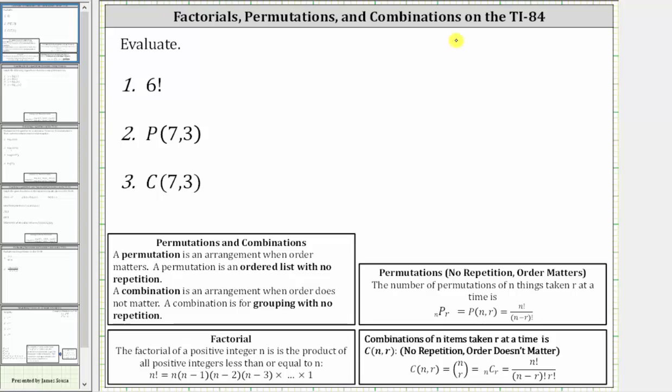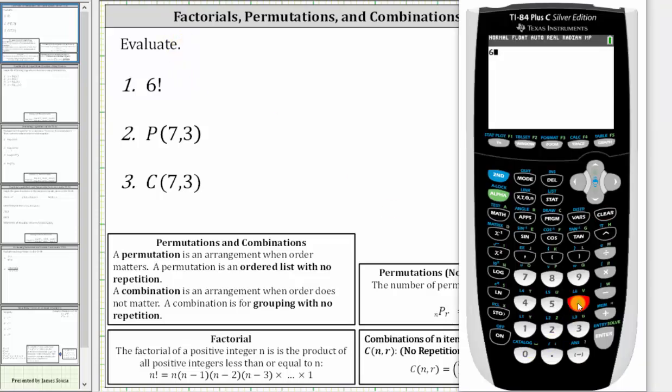For number one, we have six factorial. From the home screen, we press six, math, right arrow to PROB for probability.